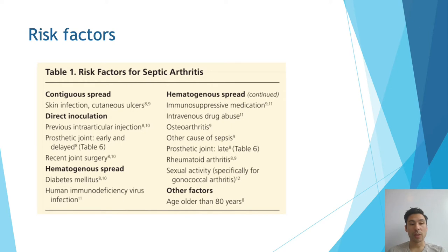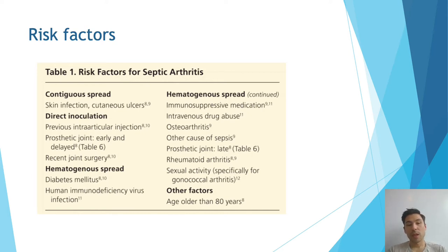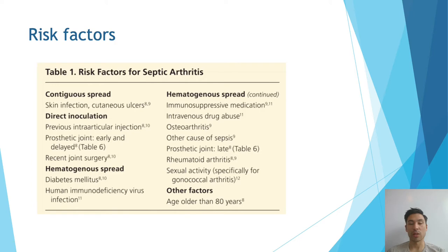The risk factors involved in septic arthritis are largely dependent on the type of spread. For direct inoculation, consider whether the person has had recent joint surgery or recent intra-articular injections. In regards to hematogenous spread, things to think about would be diabetes and HIV, which increase the risk of infection, as well as IV drug users and other forms of sepsis or systemic infections. Especially in the young population, you want to consider sexual activity. Contiguous spread could be from ulcers or skin lesions near the joint in question.